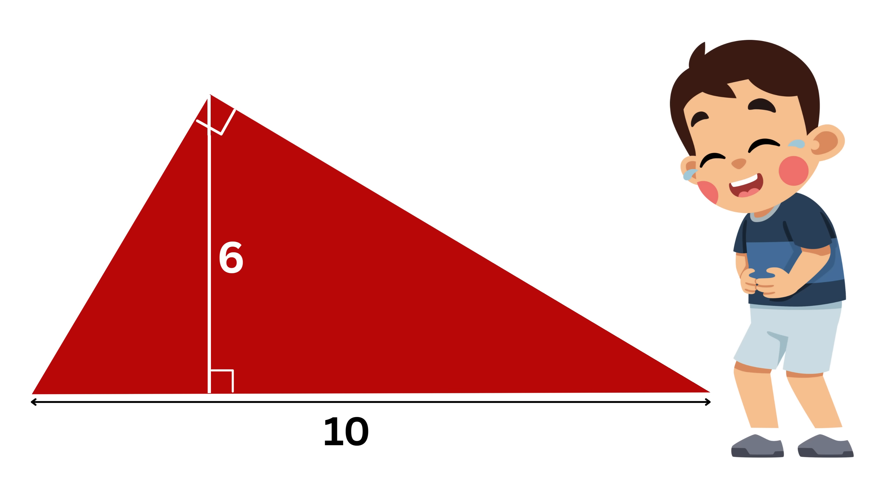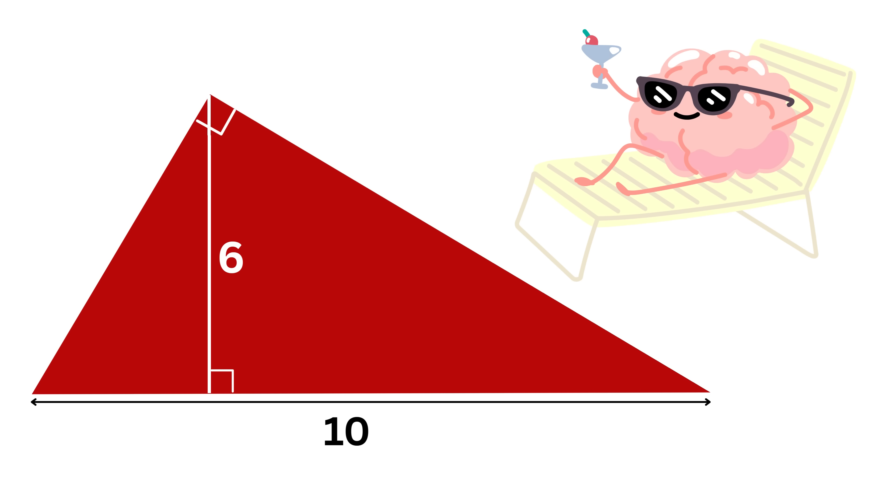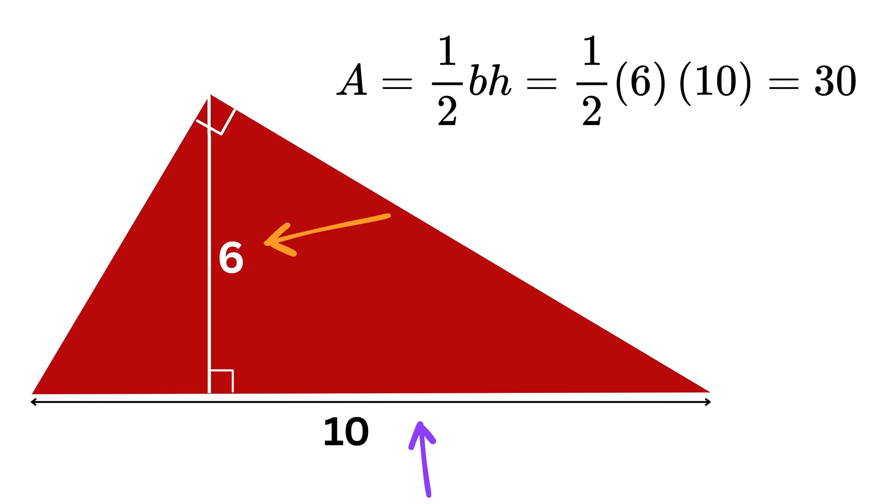You might laugh at this and say, this is super easy. Just use the area equals half times base times height. Height is 6, hypotenuse or the base is 10. Half of 6 times 10 is 30, and we are done, right?